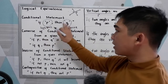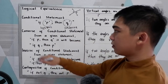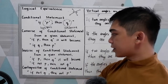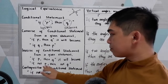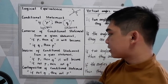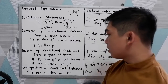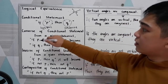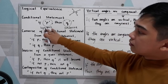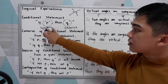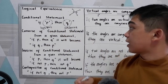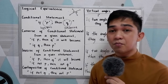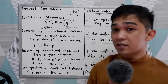Take note of the following: Conditional — if p then q. Converse — if q then p. Inverse — if not p then not q. Contrapositive — if not q then not p. Here, p stands for the hypothesis and q stands for the conclusion. Now let's have a series of examples to understand this logical equivalence.